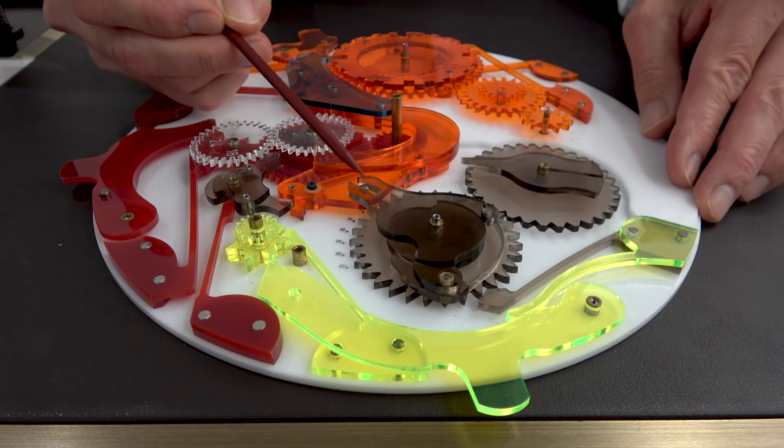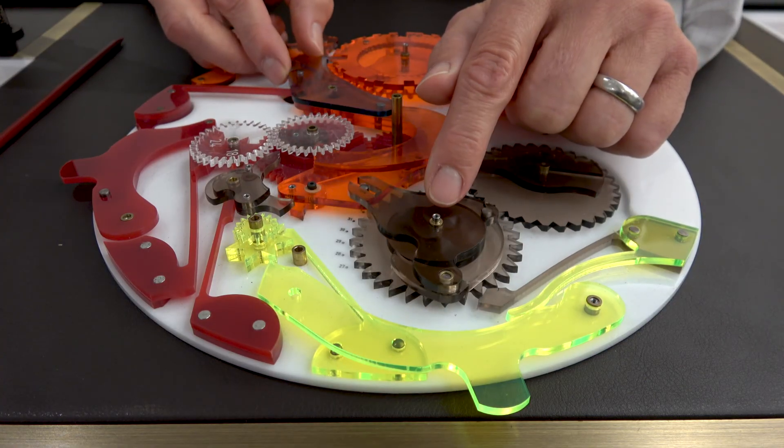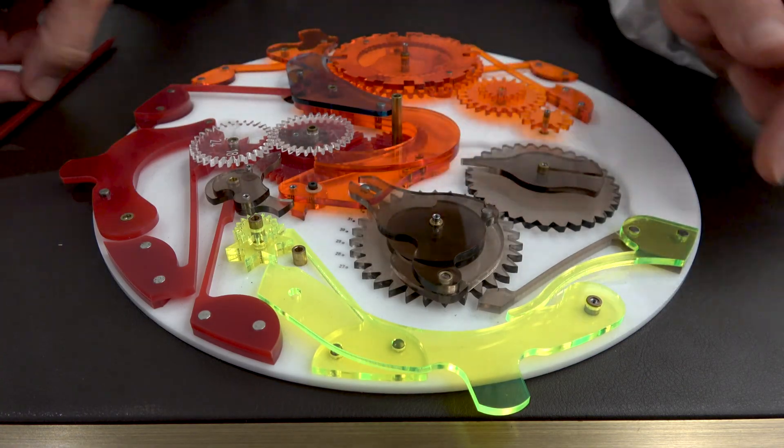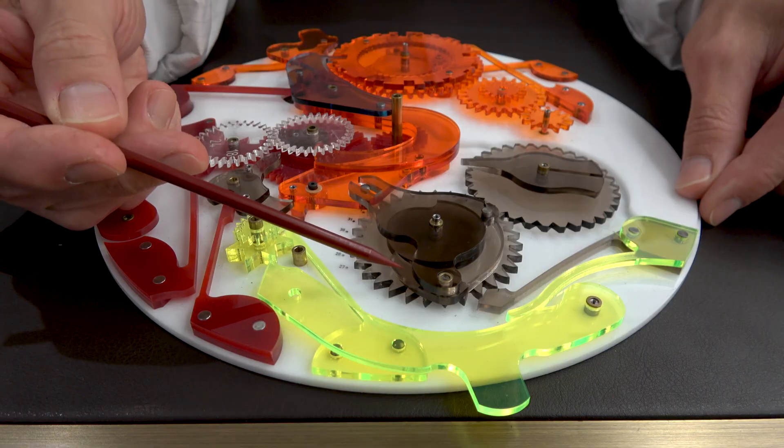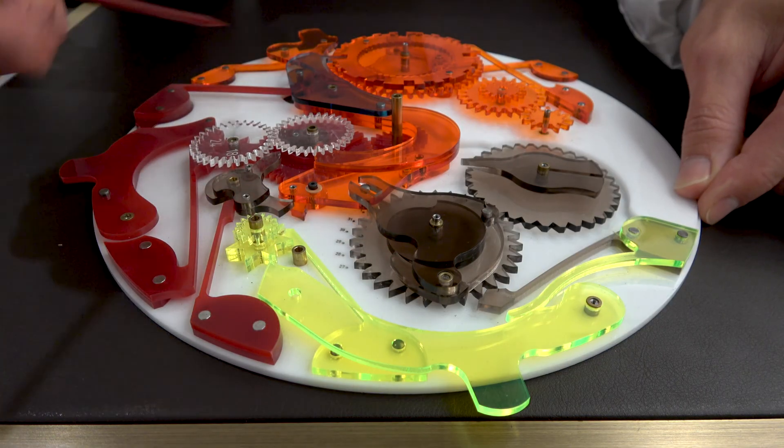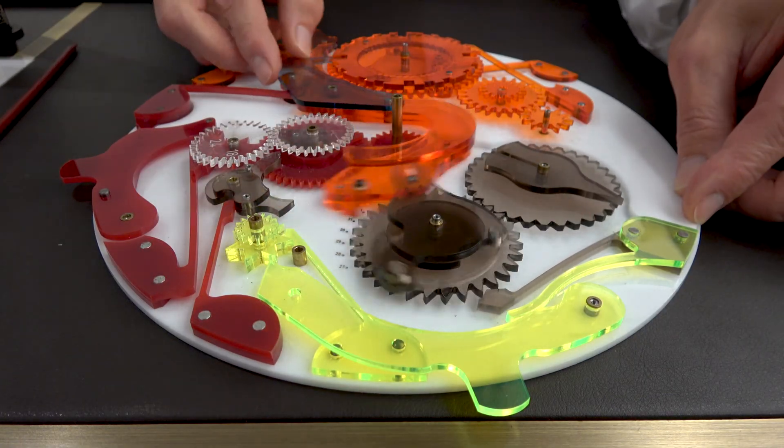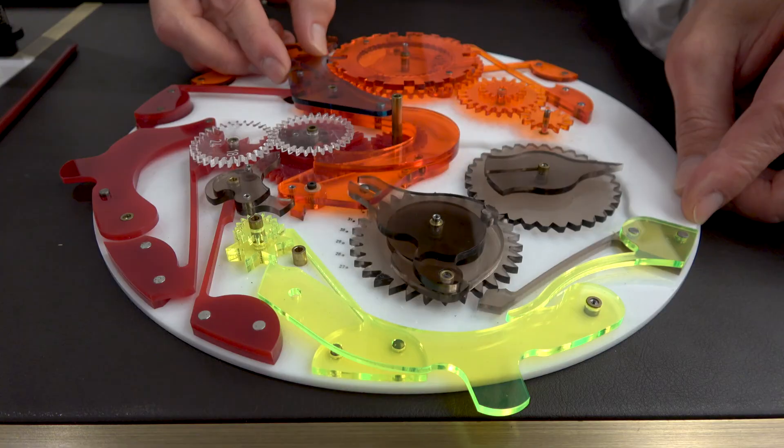We have a pin here on the great lever. This pin drives this part that we call a shuttle. We have a click on the shuttle that rides on top of a snail cam. We call it that because it looks like a snail. So we change state every night at midnight.